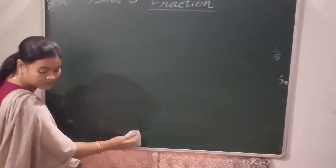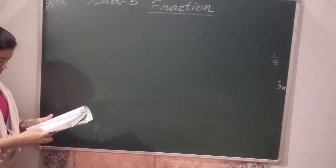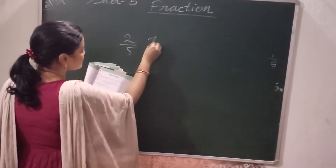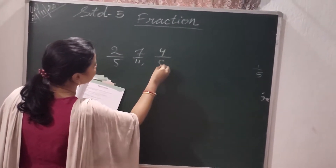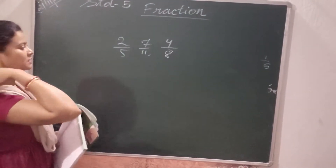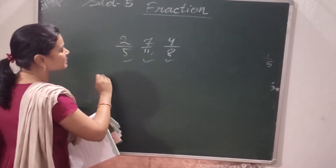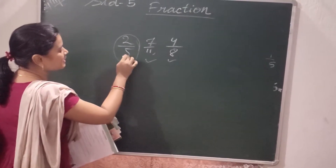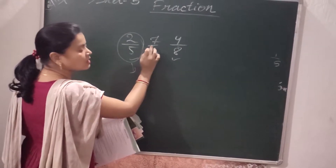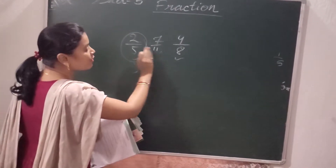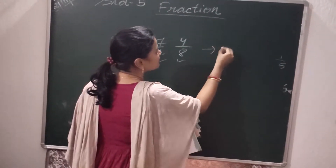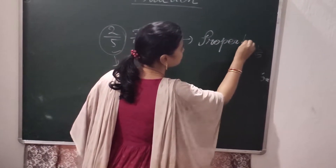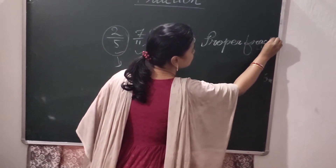Some fractions are called proper fractions and others are called improper fractions. Look at here: 2 by 5, 7 by 11, 4 by 8. In this case the denominators 5, 11, 8 are greater than the numerators. That means denominator is greater than numerator, so all these fractions are called proper fractions.